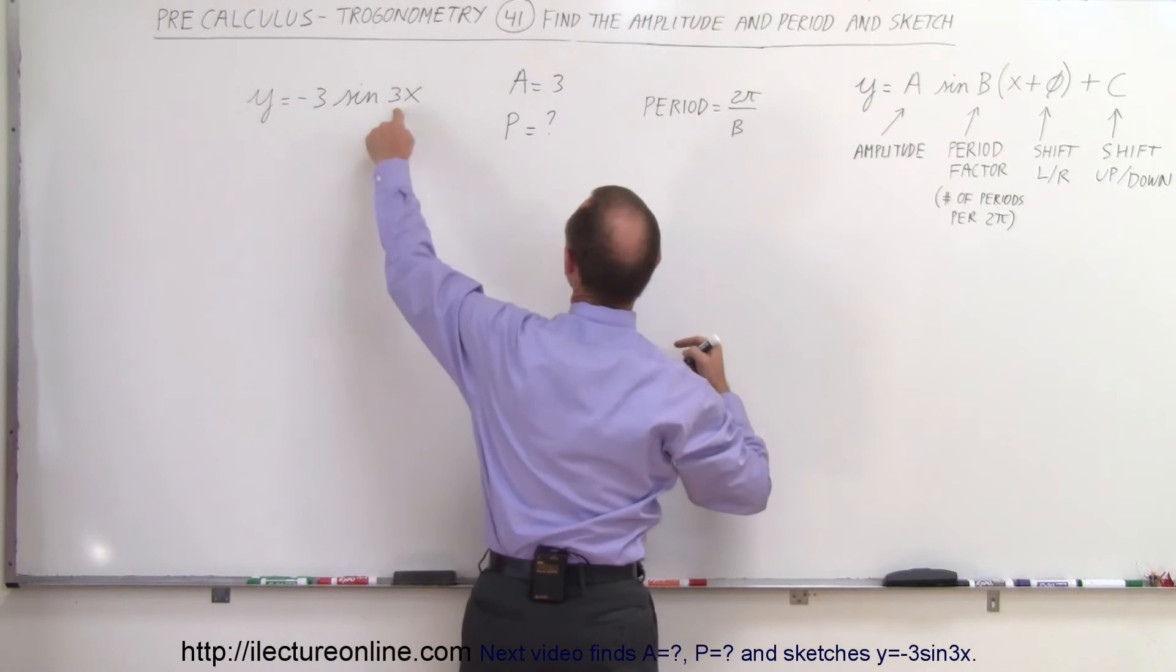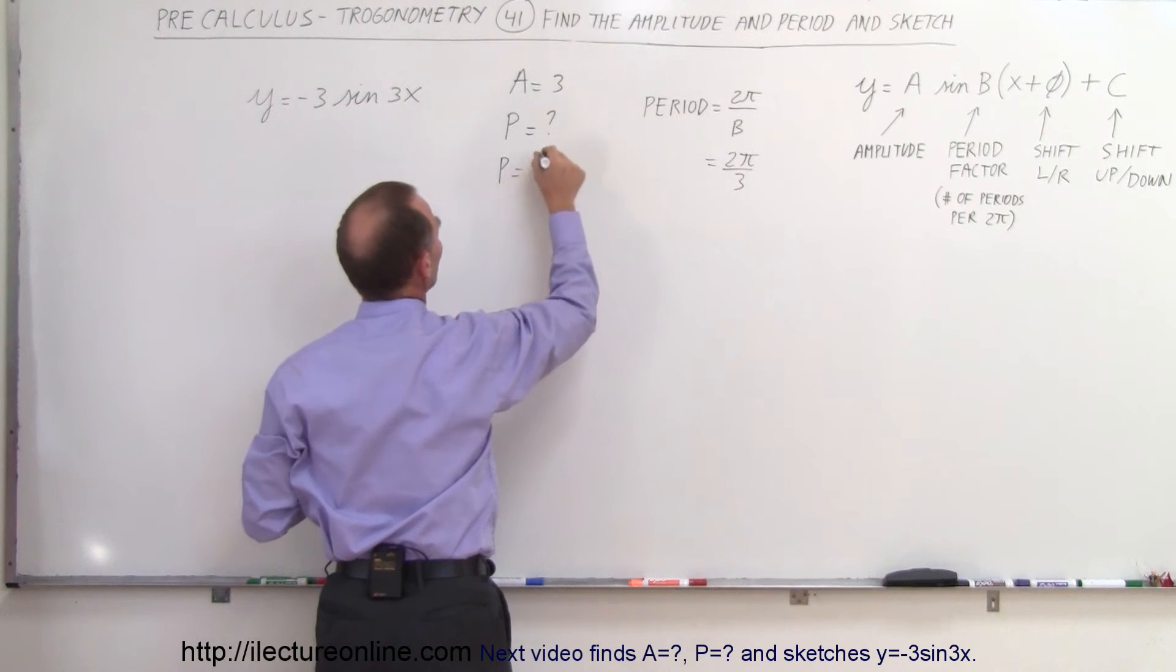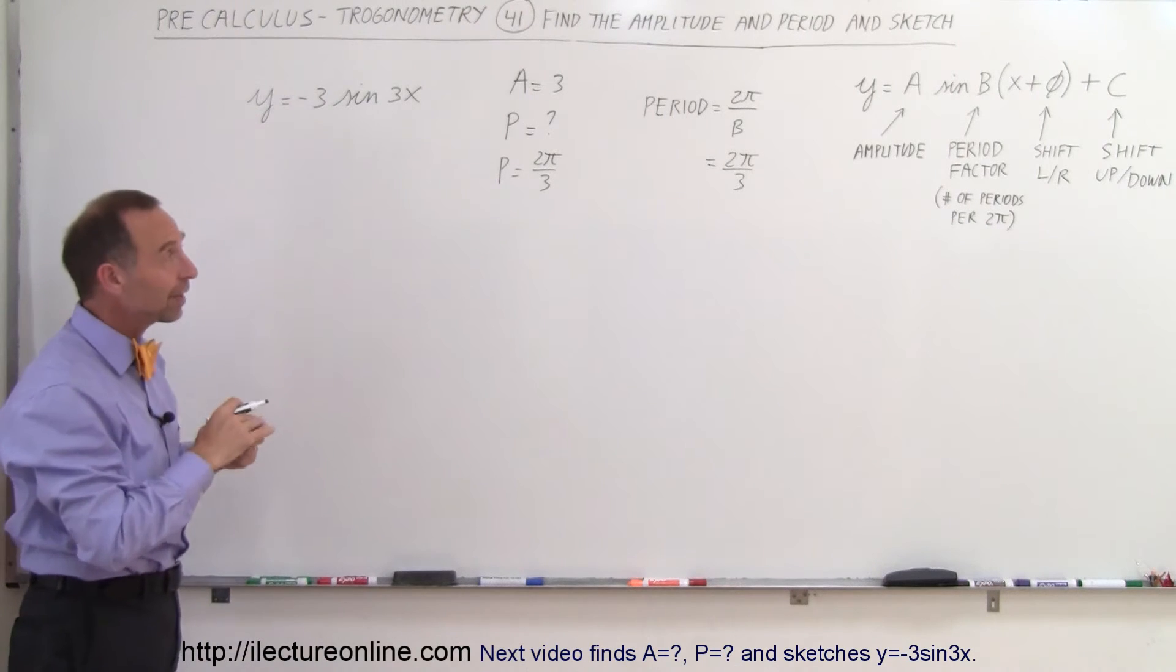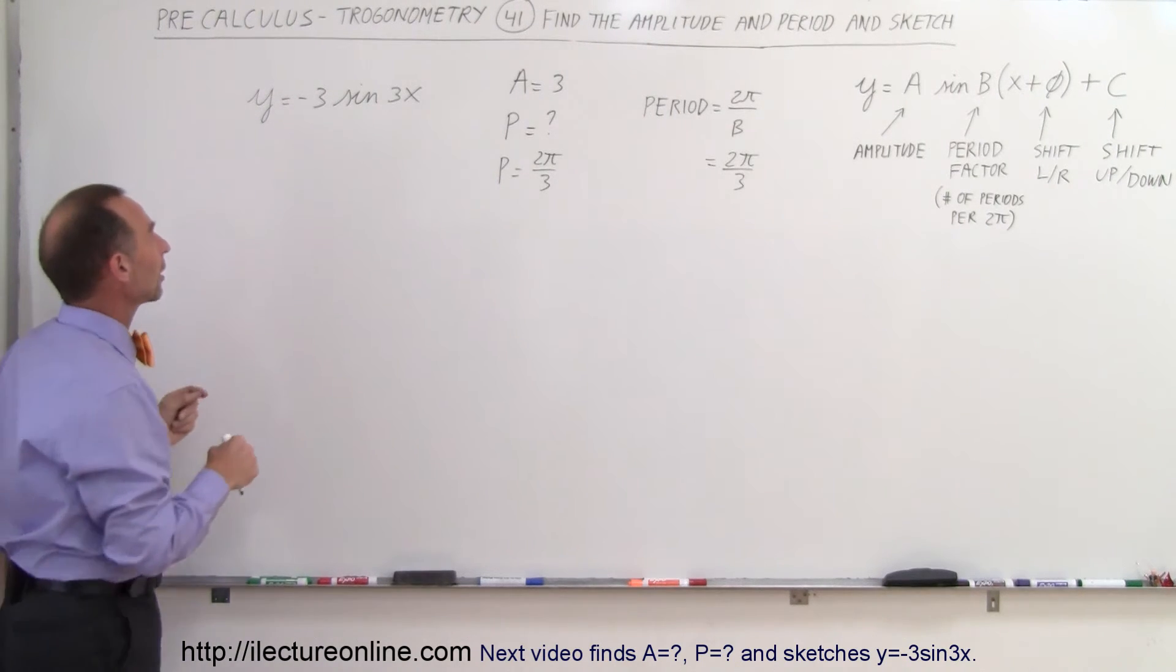So in this case B is equal to 3 so this would be 2 pi divided by 3 and that would be the period. So the period is equal to 2 pi divided by 3 which means that every 2 pi divided by 3 it goes to one complete cycle, one complete wave of the drawing.